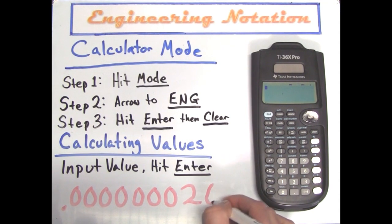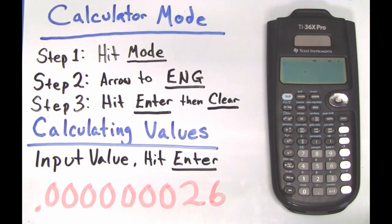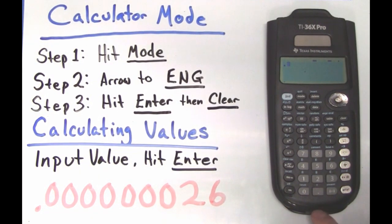If we are using powers of 10 place values, that's 26 hundred millionths, which is way too complicated. So let's apply engineering notation, which is using powers of 3 to simplify this number. Our calculator is already set up, so all we have to do is punch in the number and hit enter.